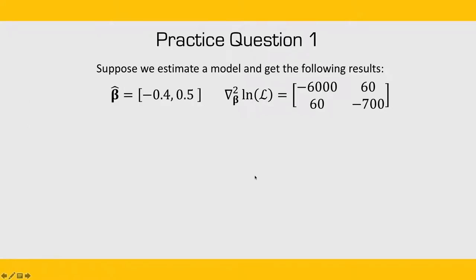So for practice question one, let's say we estimated a model. Our beta coefficients are beta1 is -0.4, beta2 is 0.5, and this is the Hessian matrix, the matrix of second derivatives that result from our estimation. Part A,